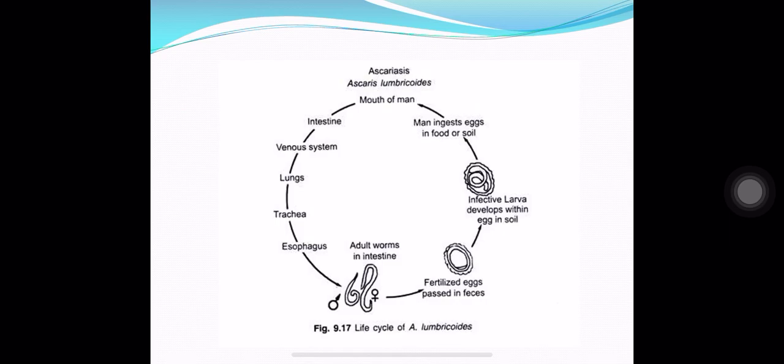This is the life cycle of Round Worm, shown in an anti-clockwise direction. Adults fertilize and produce eggs in the intestine, which are passed in feces. The eggs mature in the soil, and the mature infective eggs are ingested by another host. From the intestine, they enter the venous system, pass through the lungs, then via the trachea return to the esophagus and back to the intestine. The Round Worm undergoes a heart-lung migration cycle, similar to the hookworm, and this migration is important for its growth.